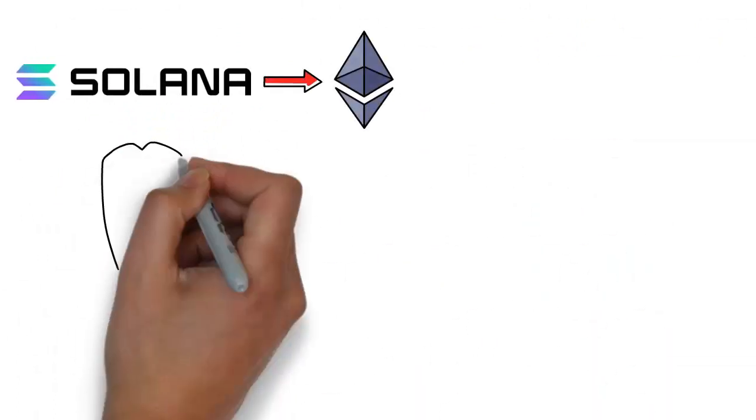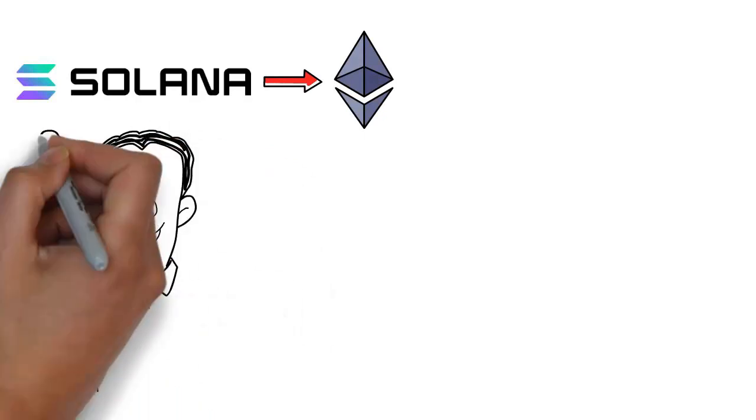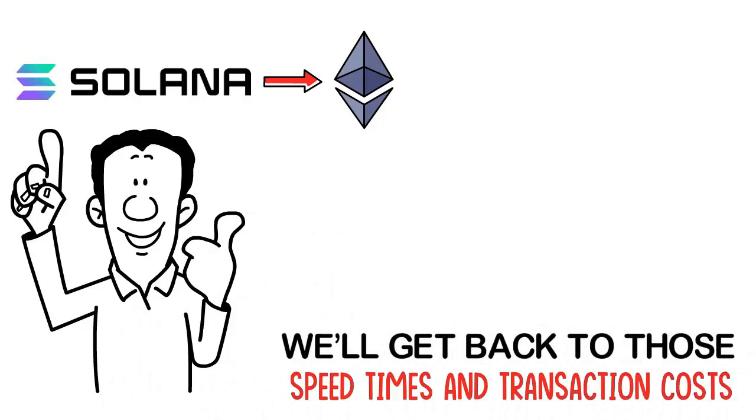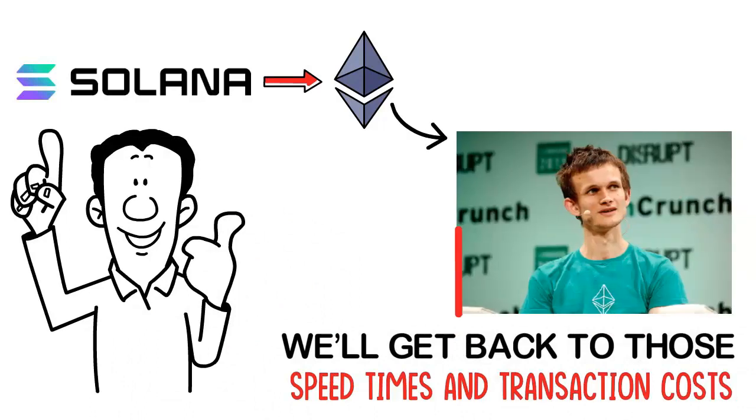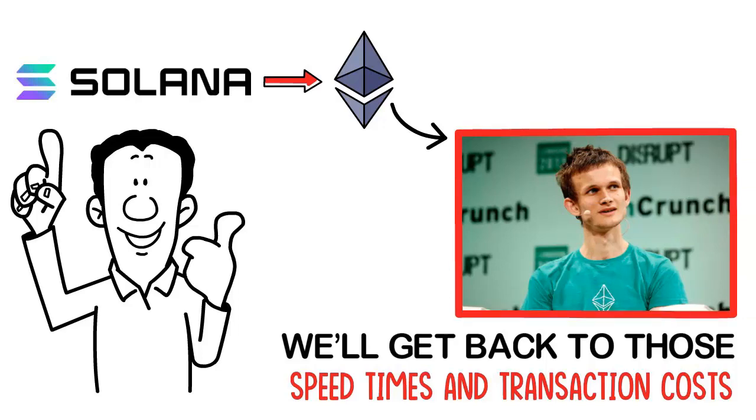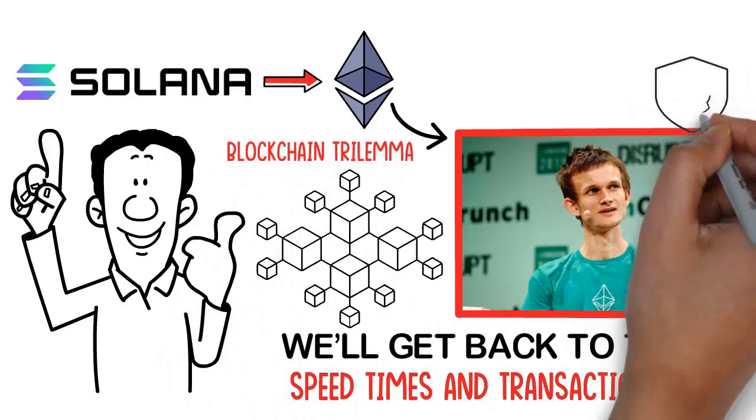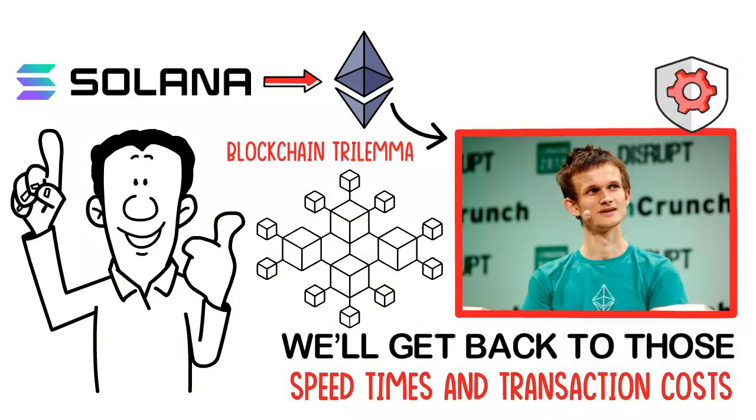Many people call Solana the Ethereum killer. So let's first talk about what makes Solana unique. We'll get back to those speed times and transaction costs in a second. Let's start off by talking about Ethereum's creator, Vitalik Buterin, who describes a problem with blockchains called the blockchain trilemma. This is a set of three challenges that developers face when building blockchain: decentralization, security, and scalability.